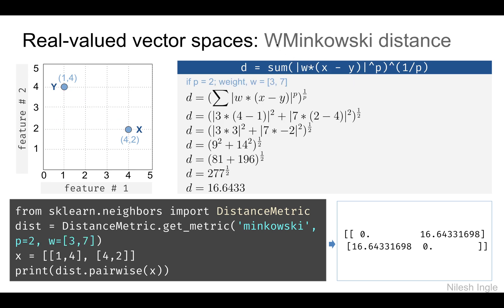Next is the weighted Minkowski distance. The parameter w represents the weight. In the previous slide we could input parameter p; here we input p equal to two and also add weights. We can assign a weight to each feature — let's say weights of three and seven — so we multiply the x coordinates by three and the y coordinates by seven. The resulting output distance is 16.6433, as also shown in the matrix.